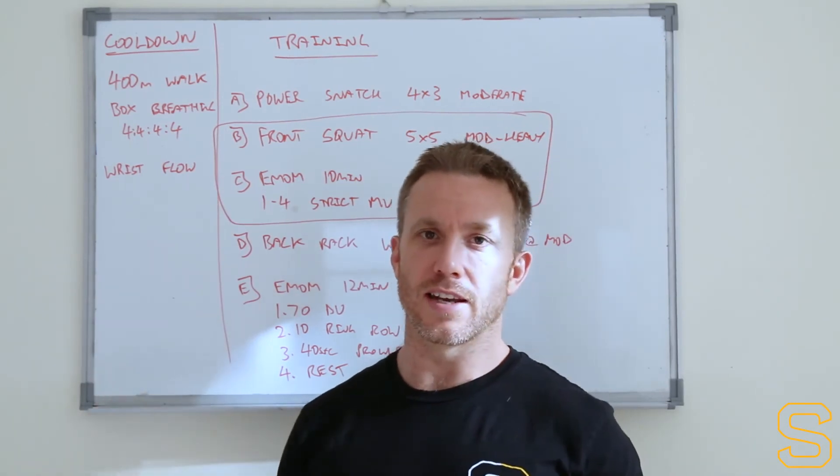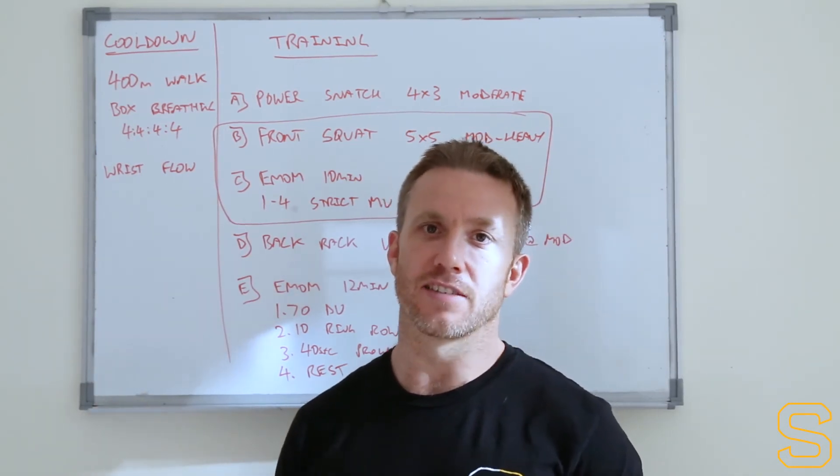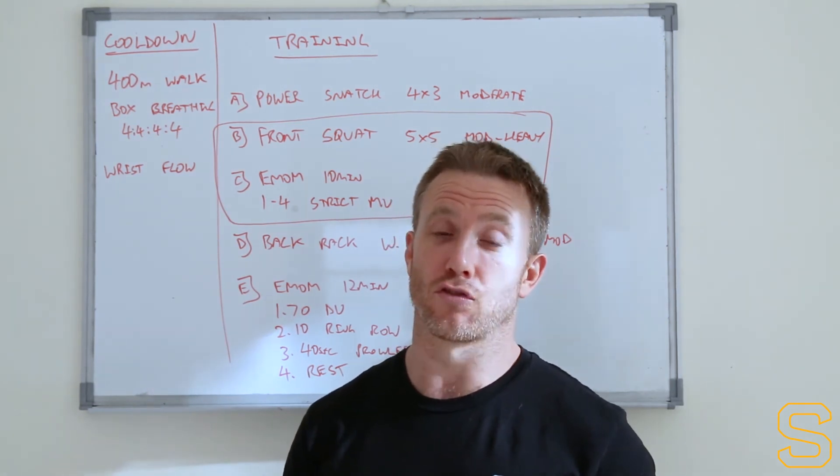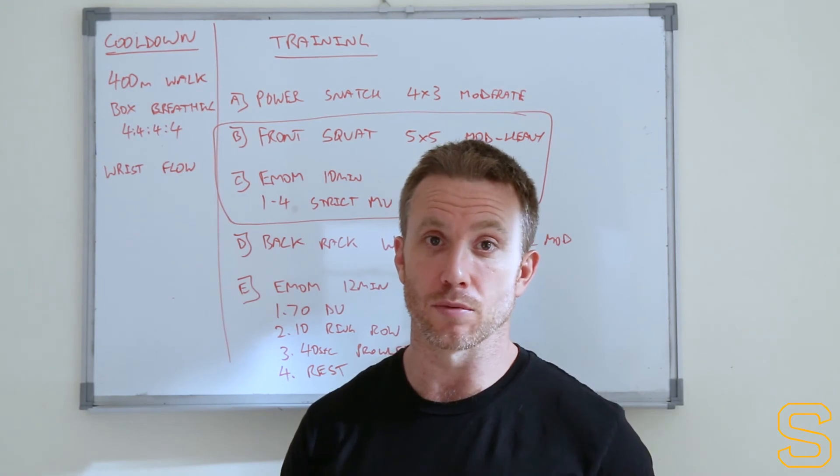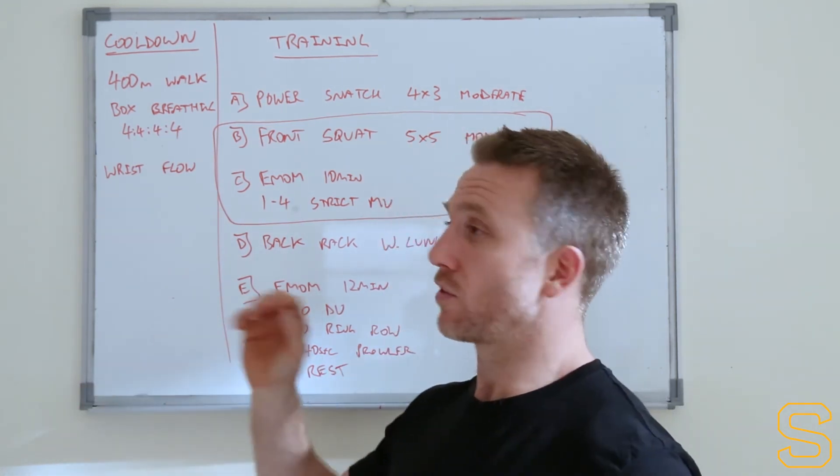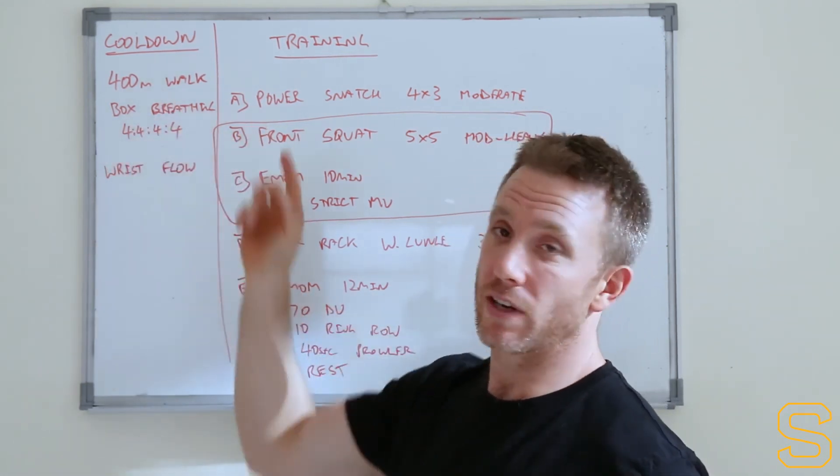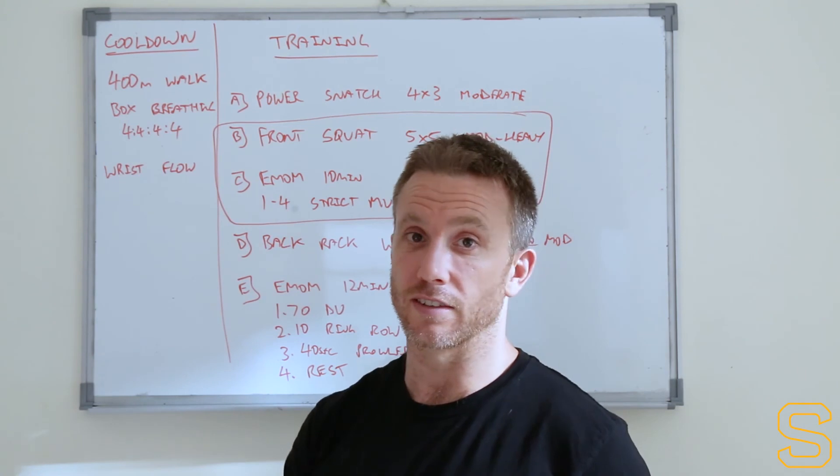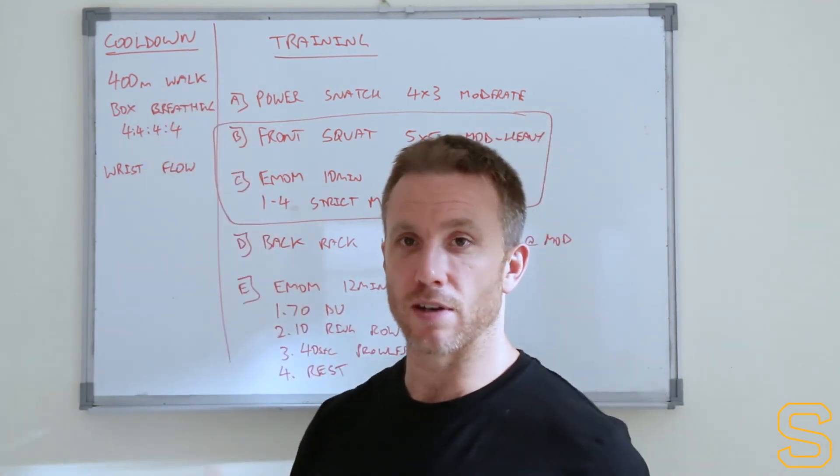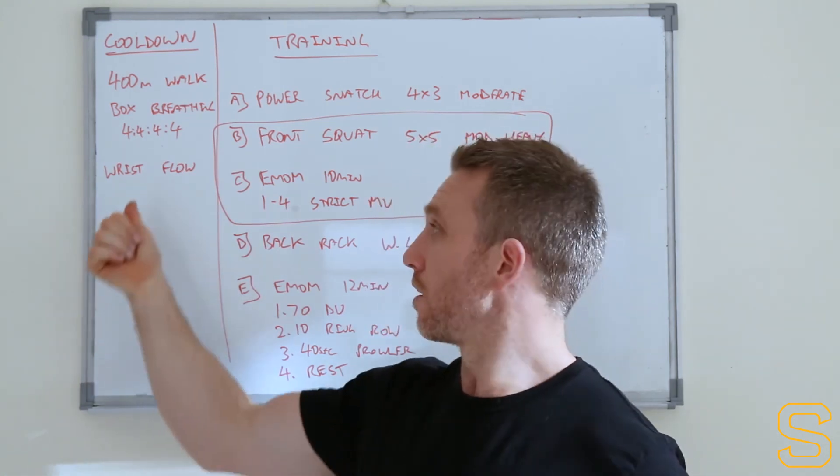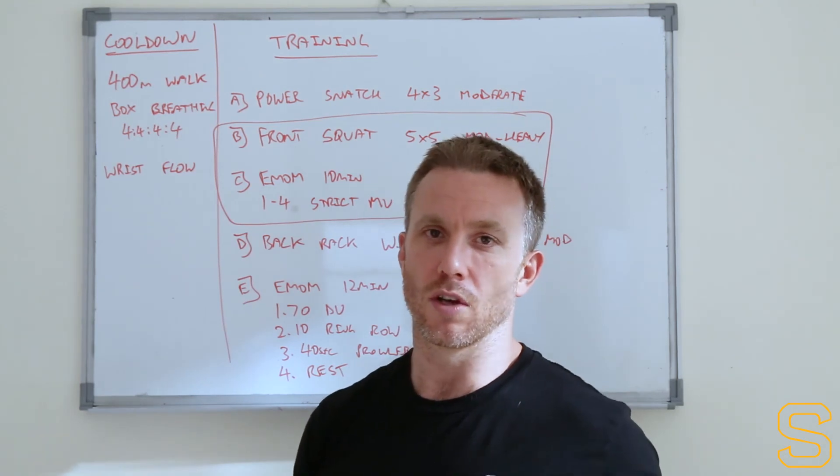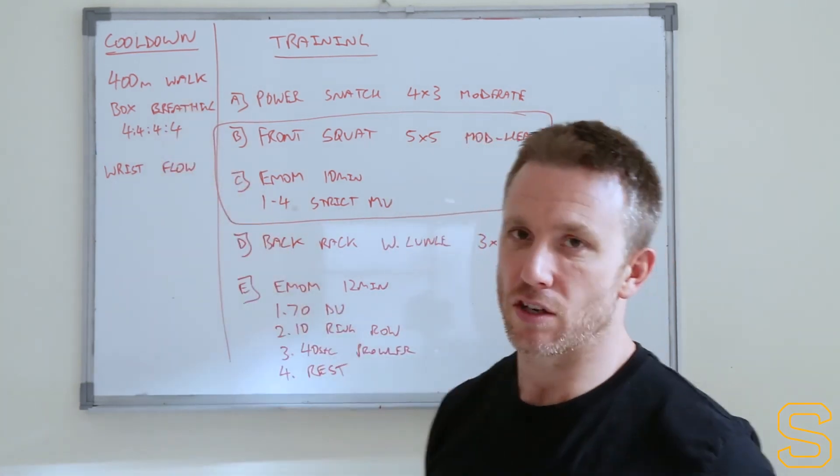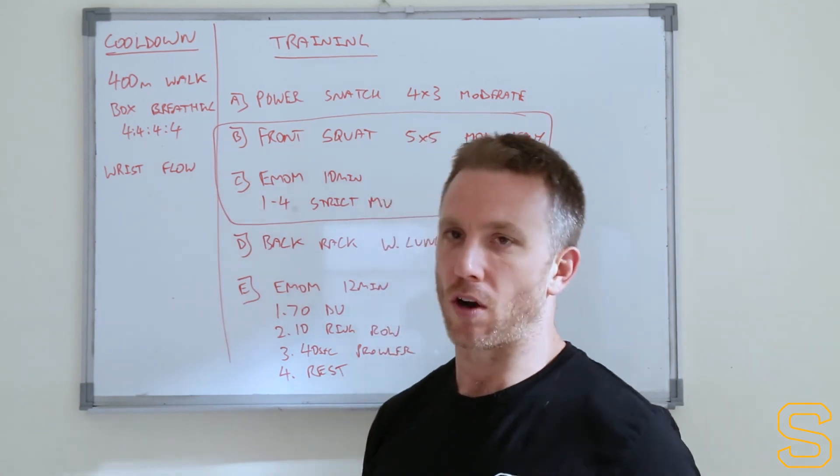Okay so the last thing to talk about is just our cool down and then our training session for immediately after 18.1. This will also depend on what kind of training volume you're used to and how much time you have, but we do suggest doing at least a little bit of strength maintenance work on the day of the open workouts all the way through. So first thing you're going to do after the workout once you've recovered a little bit is go head out on a 400 meter walk, nice easy box breathing protocol in through the nose out through the mouth, in for four, hold for four, out for four, hold for four seconds. And then during the course of that 400 meters just focus on that breathing and calming down a little bit. When you come back into the gym some wrist flow and some stretching out of the forearms just to alleviate some of the tension that has been built up in that workout with all the grip work.